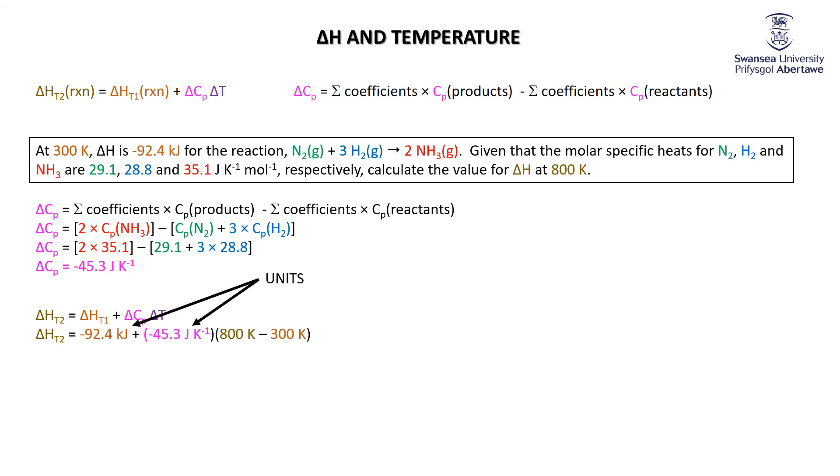Convert everything to kilojoules, pop it into our calculators, and the new delta H is minus 115.1 kilojoules. So with this rudimentary calculation, increase the temperature pretty significantly—500 Kelvin—and you do increase delta H from minus 92.4 to minus 115.1.